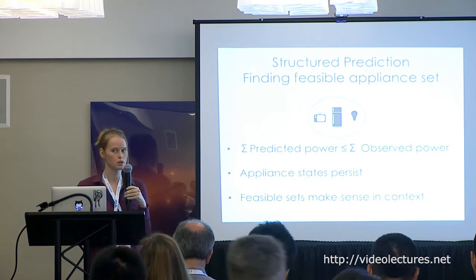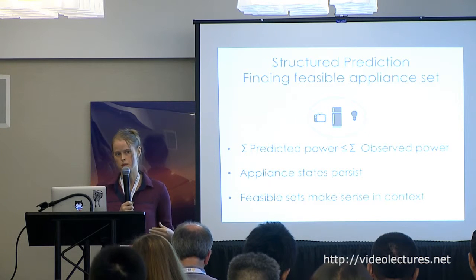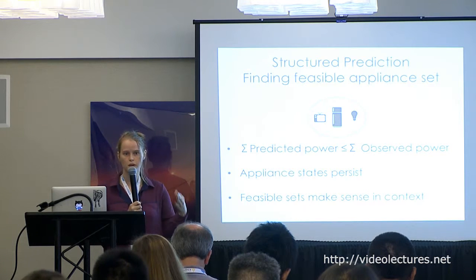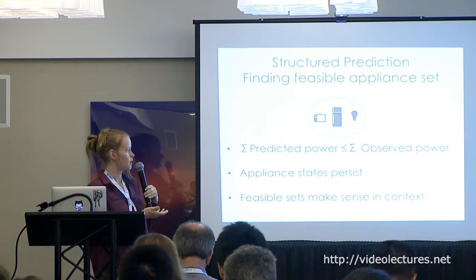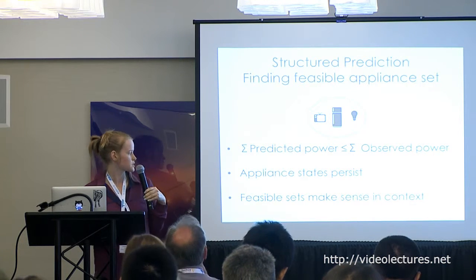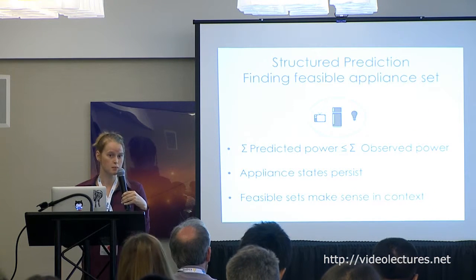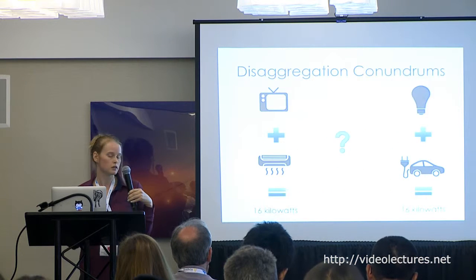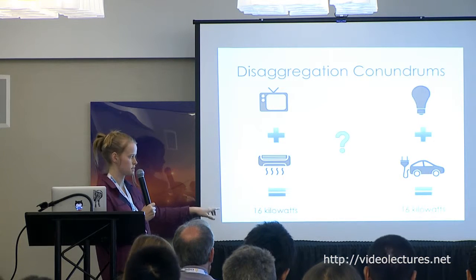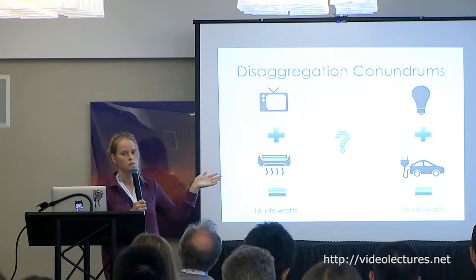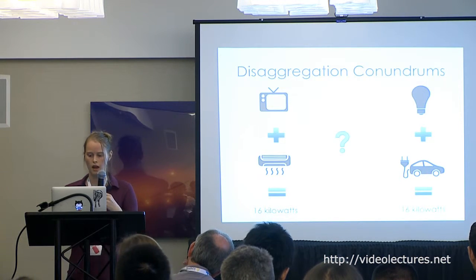This is really a structured prediction task. The sum of the predicted power of all appliances we predict to be on must be less than or equal to the observed power — so we want all on-appliances to jointly satisfy this relationship. We also have constraints like appliance states must persist and feasible appliance sets must make sense in context. You might think this is just an optimization problem, but if the total observed power is 16 kilowatts, you could find two valid combinations and not be able to determine which is more likely from power alone.